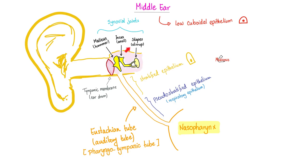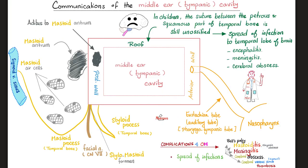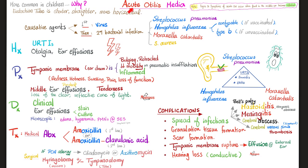Since cholesteatoma is a problem in the middle ear, it can be associated with otitis media, which is inflammation and infection of the middle ear. Middle ear infection is dangerous because it can spread to the mastoid antrum and mastoid air cells causing mastoiditis, and potentially sigmoid venous sinus thrombosis. The infection can also spread upwards into the brain, especially in young children, causing meningitis, encephalitis, or cerebral abscess. So one complication of repeated attacks of acute otitis media is cholesteatoma.